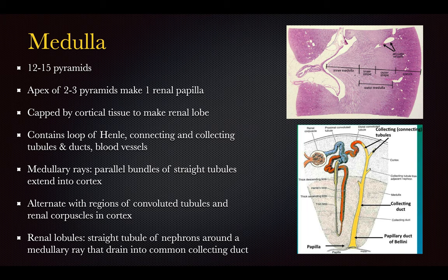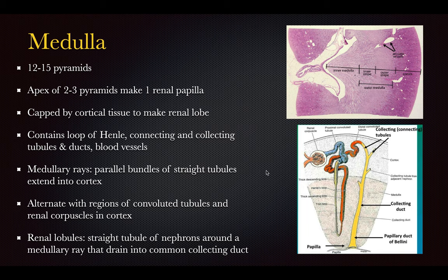The medulla has about 15 pyramids, and the apex of two to three pyramids makes one papilla, all capped by cortical tissue to make a lobe. The inner medulla and cortex contain the loop of Henle, connecting and collecting tubules and ducts, along with blood vessels. Medullary rays are straight tubules coming into the cortex. The renal lobules consist of straight tubules of nephrons around a medullary ray that drain into a common collecting duct.